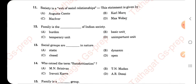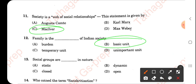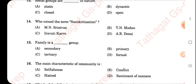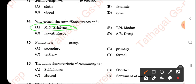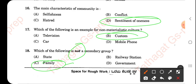Moving to the sociology section: 'Society is a web of social relationships' — this statement was given by MacIver. 'Family is the basic unit of Indian society.' Social groups are dynamic in nature — this is a repeated question from the junior assistant paper. The term 'Sanskritization' was coined by M.N. Srinivas. The main characteristic of a community is the sentiment of oneness. Family is a primary group.